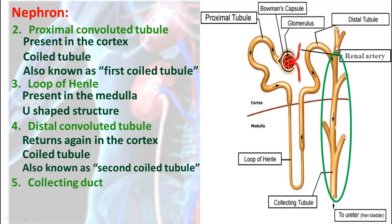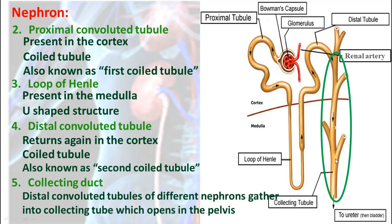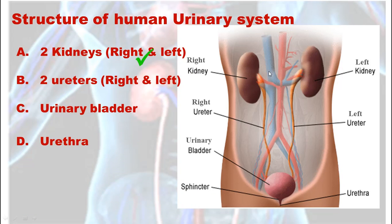The last part is the collecting duct. The collecting duct is not for only one nephron — it combines different nephrons together. Different nephrons' distal convoluted tubules pour the urine into the collecting duct, and the collecting duct transfers the urine to the pelvis. From the pelvis the ureter emerges, so it collects the urine from different nephrons and transfers it to the pelvis and from the pelvis to the ureter.